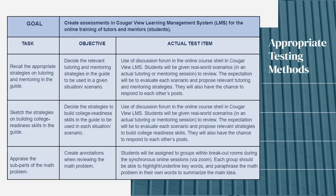With this, we have testing methods showing how we would reach these goals with the task, objective, and test item we would put forward. For example, a task would be to recall the appropriate strategies on tutoring and mentoring in the guide. An objective would be to decide the relevant tutoring and mentoring strategies in the guide to be used in a given situation or scenario. For the actual test items, most include real-world scenarios where we work through something in either the tutoring or the mentoring component to meet these criteria.